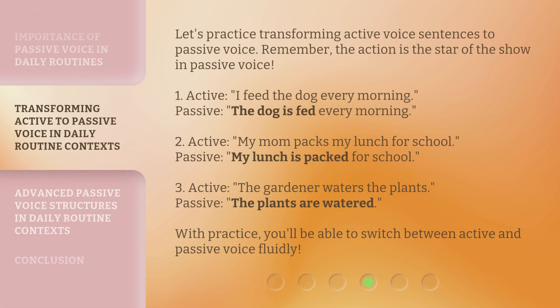Let's practice transforming active voice sentences to passive voice. Remember, the action is the star of the show in passive voice. One — Active: 'I feed the dog every morning.' Passive: 'The dog is fed every morning.' Two — Active: 'My mom packs my lunch for school.' Passive: 'My lunch is packed for school.' Three — Active: 'The gardener waters the plants.' Passive: 'The plants are watered.' With practice, you'll be able to switch between active and passive voice fluidly.